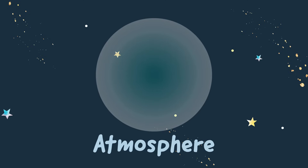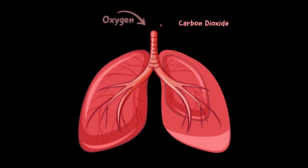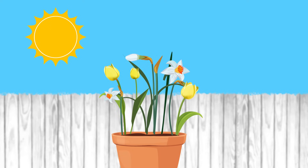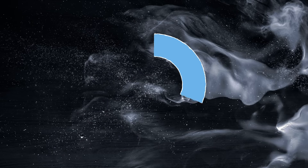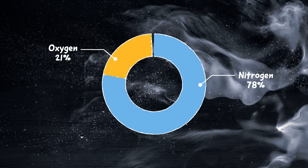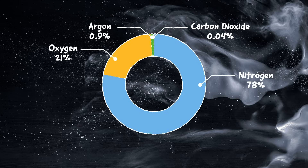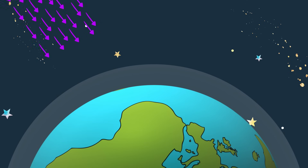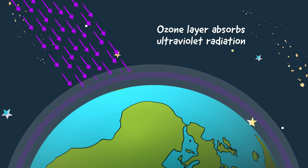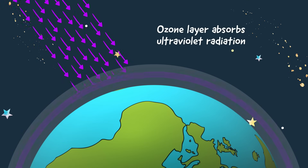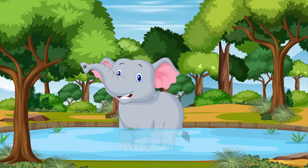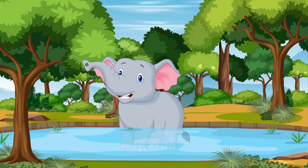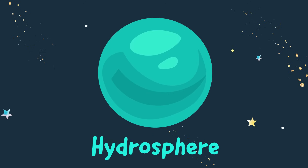The atmosphere is the layer of gases that surrounds the earth. It's the air that animals like you and me breathe and that plants use for photosynthesis. The atmosphere is made up of nitrogen, oxygen, argon, carbon dioxide, and other gases. The atmosphere protects us from the sun's harmful ultraviolet rays, and it also traps heat from the sun, so I stay nice and warm. Sometimes a little too warm, which leads me to the hydrosphere.